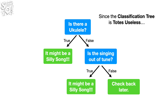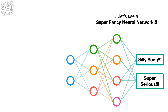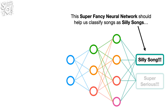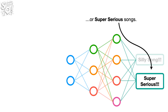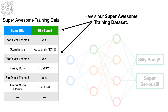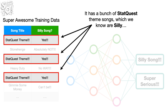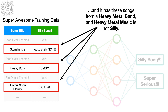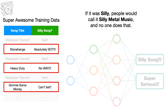Since the classification tree is totes useless, let's use a super fancy neural network. This super fancy neural network should help us classify songs as silly songs or super serious songs. Here's our super awesome training data set. It has a bunch of StatQuest theme songs, which we know are silly. And it has these songs from a heavy metal band, and heavy metal music is not silly. If it was silly, people would call it silly metal music, and no one does that.